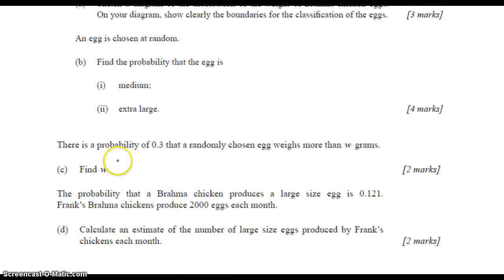And then finally, we have the probability is 0.3 that a randomly chosen egg weighs more than w grams, and we need to find w. That's just like the second type of thing I showed you with the calculator, where you have to find the value given a specific probability.